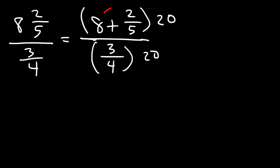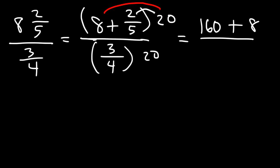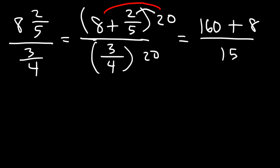So let's distribute: 8 times 20 — well, 8 times 2 is 16, so 8 times 20 is 160. Now 2 over 5 times 20: 2 times 20 is 40, and 40 over 5 is 8. On the bottom, 20 divided by 4 is 5, and 5 times 3 is 15 — or equivalently 3 times 20 is 60 and 60 divided by 4 is 15. So we have 160 plus 8 over 15.